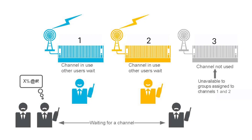Think for a moment: channel one, the fire channel, you'd expect to be busy all the time. But channel three, the animal control channel — well, how many loose dogs are there? That channel can go idle. So while you've got callers waiting to have a crack at channel one, they can't make use of channel three even though it's completely idle.